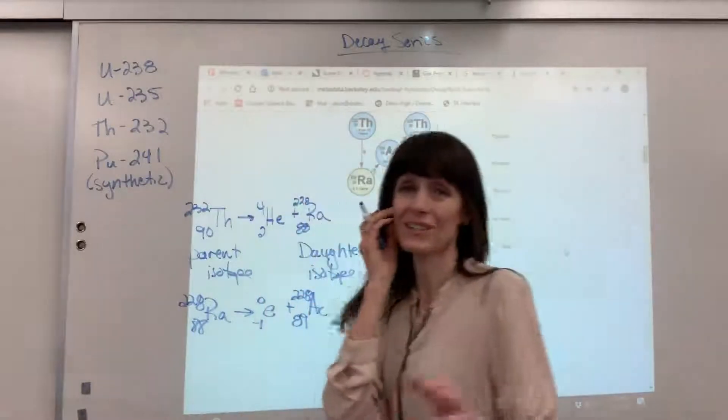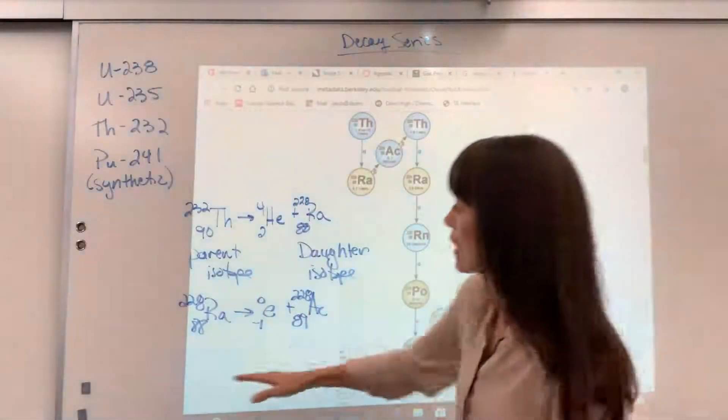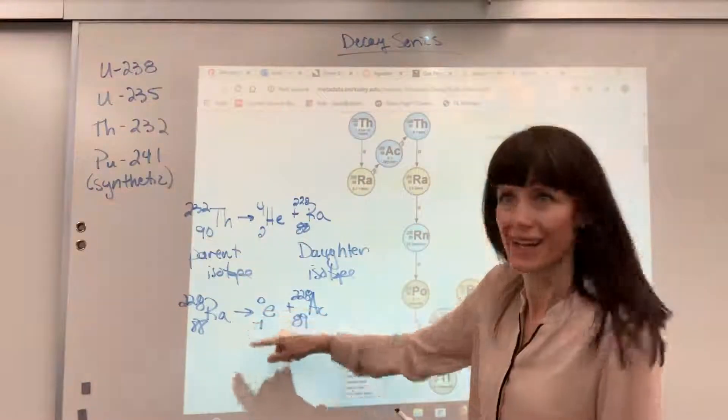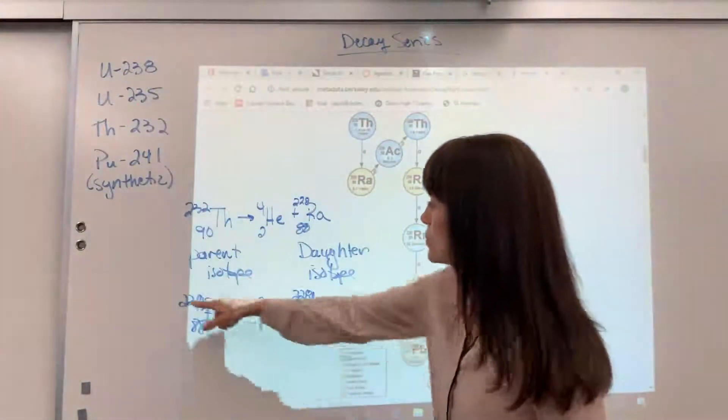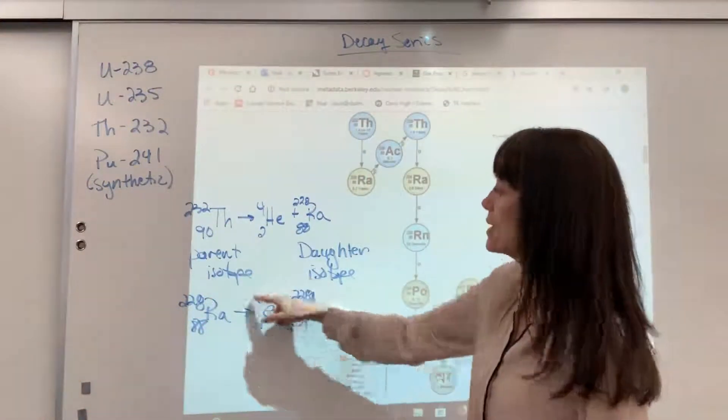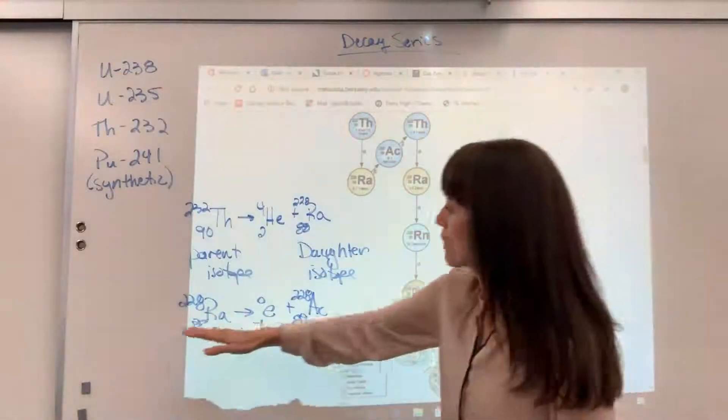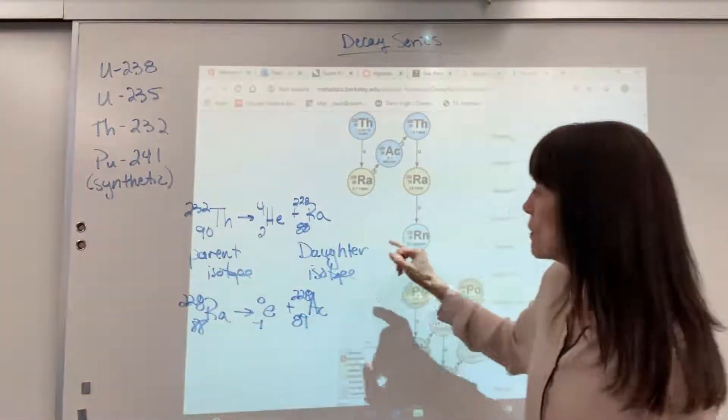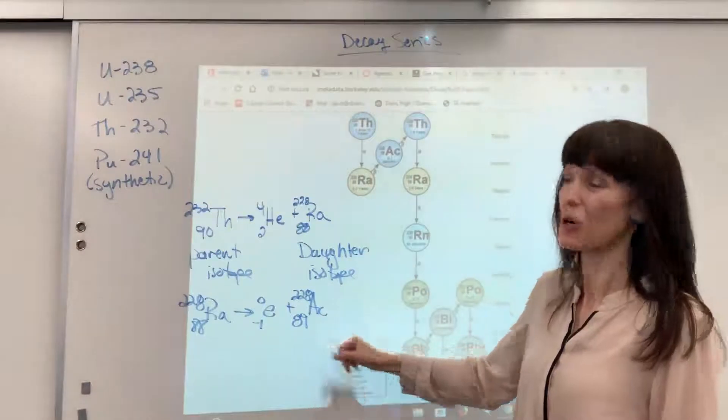So again, let's check our nuclear equation. We've got 88 equals 89 minus 1, 88. Perfect. And then 228 equals 0 plus 228, that's 228. So the radium is now the parent isotope, and the actinium becomes the daughter isotope.